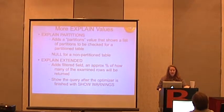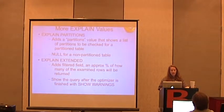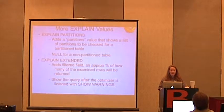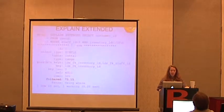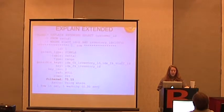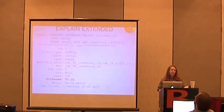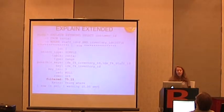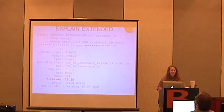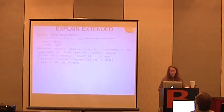You can also use EXPLAIN PARTITIONS and EXPLAIN EXTENDED. EXPLAIN EXTENDED adds a filtered field, which is an approximate percentage of how many of the examined rows will actually be returned. For example, here's an EXPLAIN EXTENDED with rows 326, but filtered is 75.15 — meaning about 75% of the rows it looks at will be returned. If that filtered value is low, you might want to ask why you're not returning most of what you're examining — maybe it's not a good index.